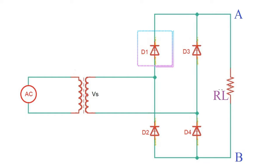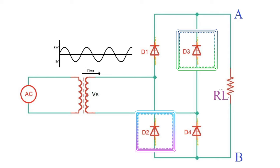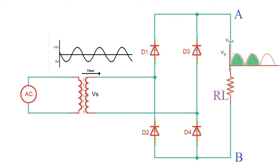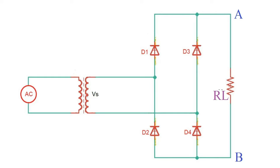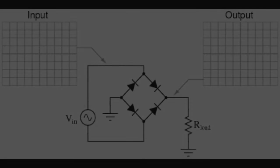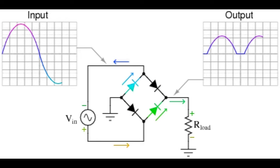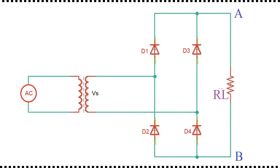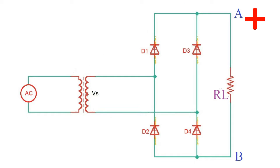During the negative half cycle of VIN, diodes D3 and D2 are forward biased while diodes D4 and D1 are reverse biased. For the negative half cycle of the input waveform, current flows along the path of D3, node A, RL, node B, D2, and back to the supply. In both cases the positive and negative half cycles of the input waveform produce positive output peaks regardless of polarity, and as such the load current I always flows in the same direction through the load RL between nodes A and B. Thus the negative half cycle of the source becomes a positive half cycle at the load.